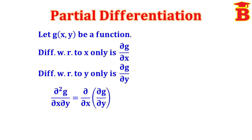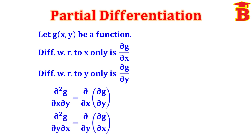Next, the formula: ∂²g/∂x∂y is equal to ∂/∂x of (∂g/∂y). And ∂²g/∂y∂x is equal to ∂/∂y of (∂g/∂x).